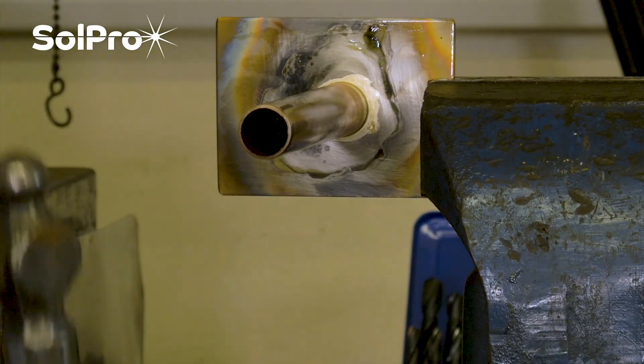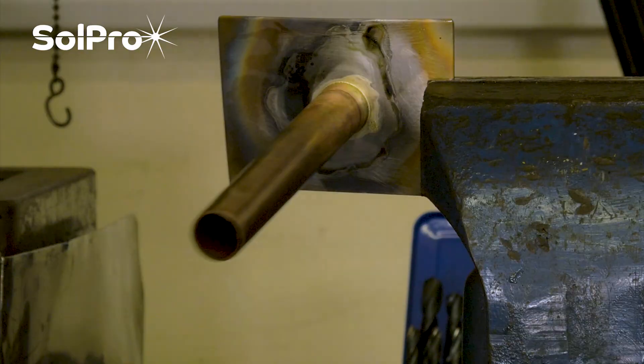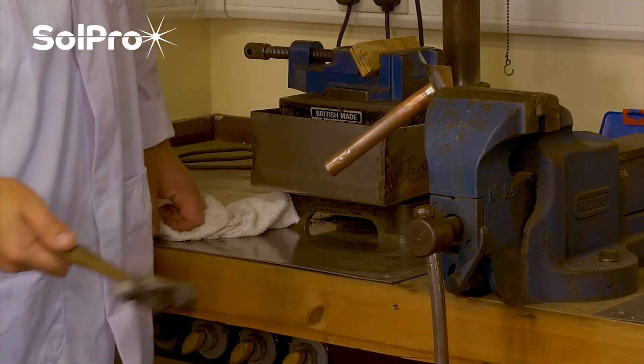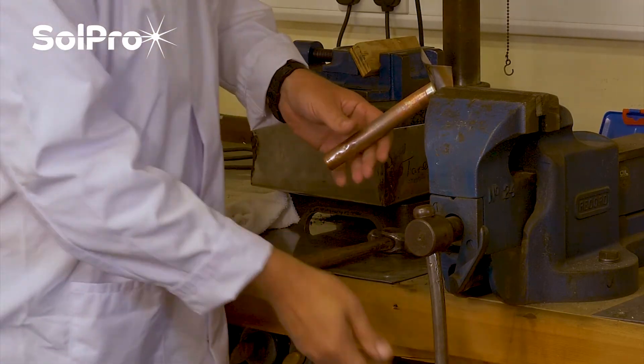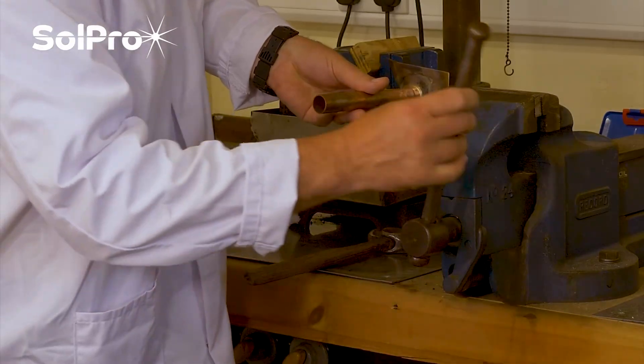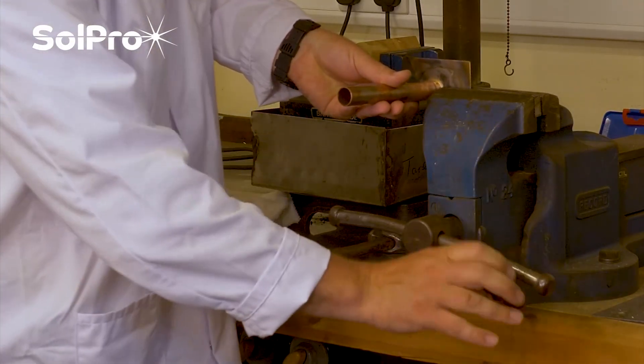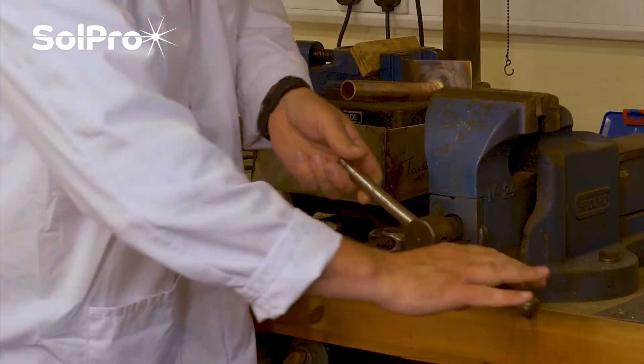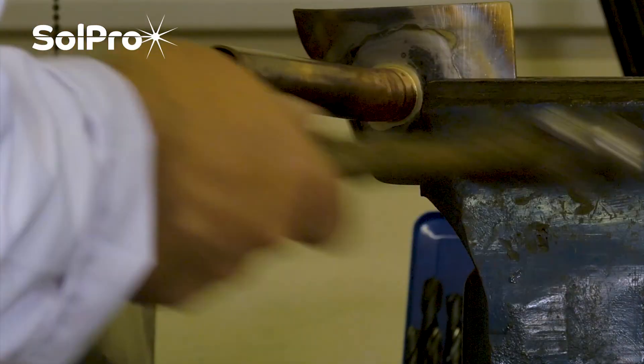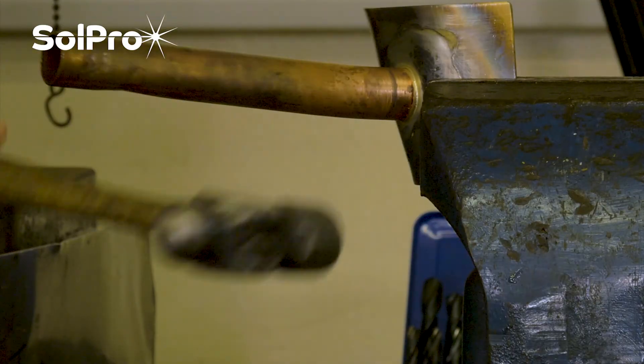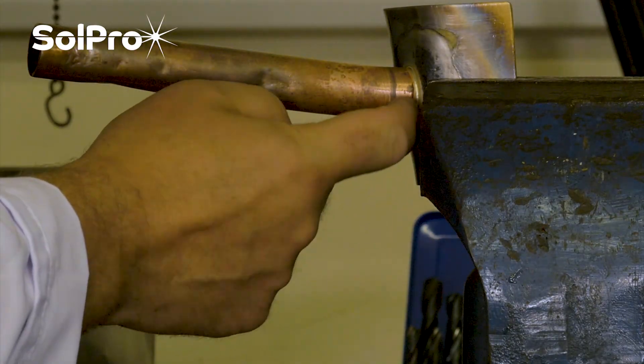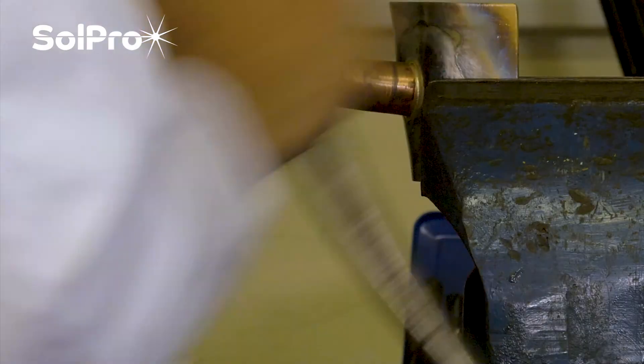Just check the vice is nice and tight and give it a good bang. Try it that way as well. Get it nice and close to the joint. We should be able to give this a hit, and at no point has the brazed joint actually broken.